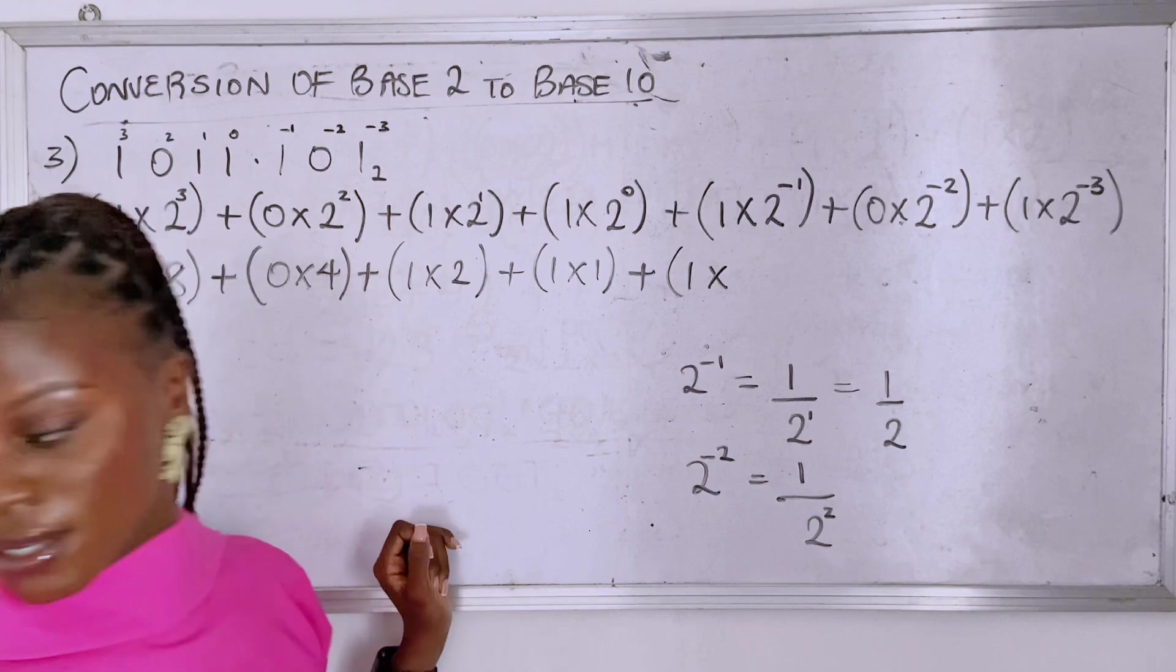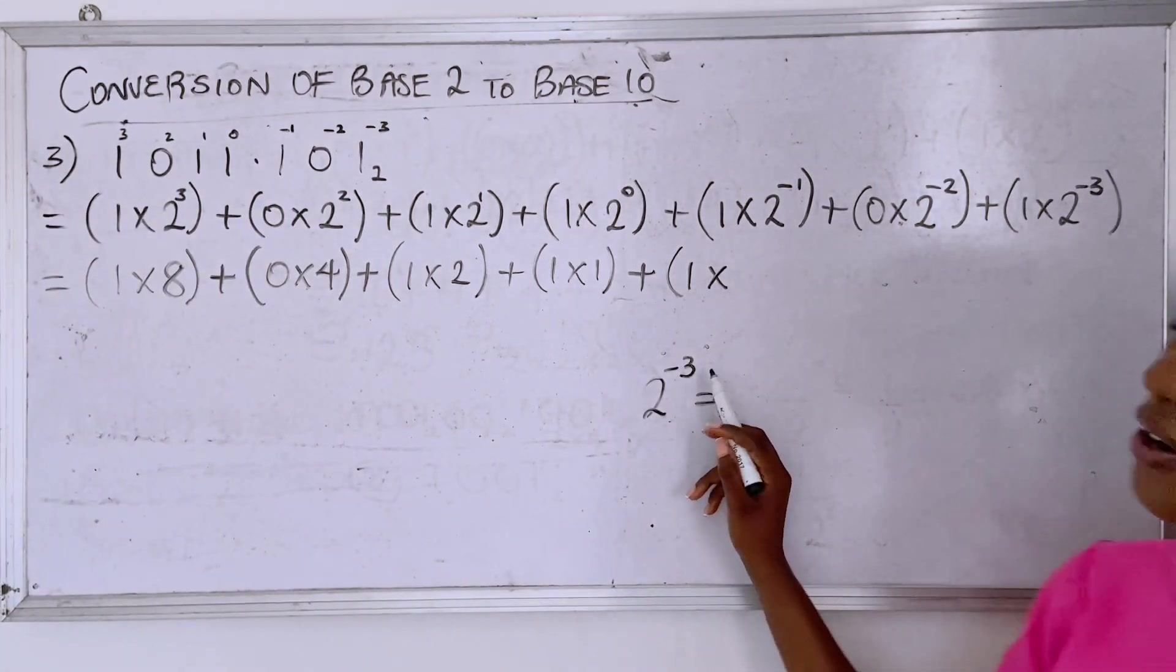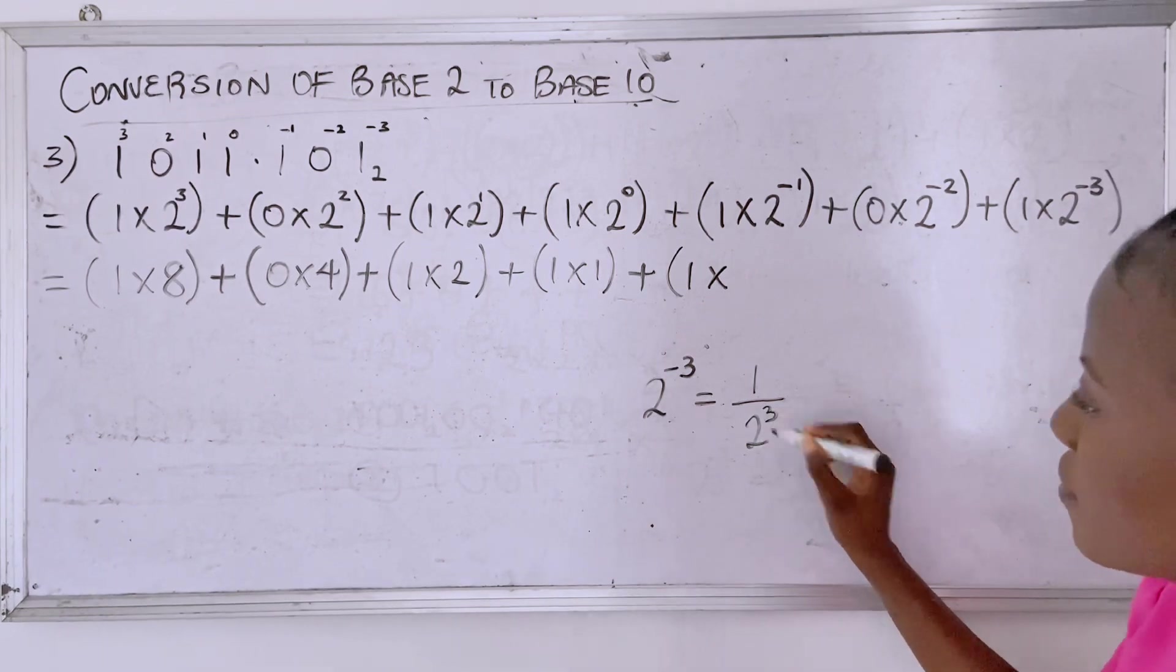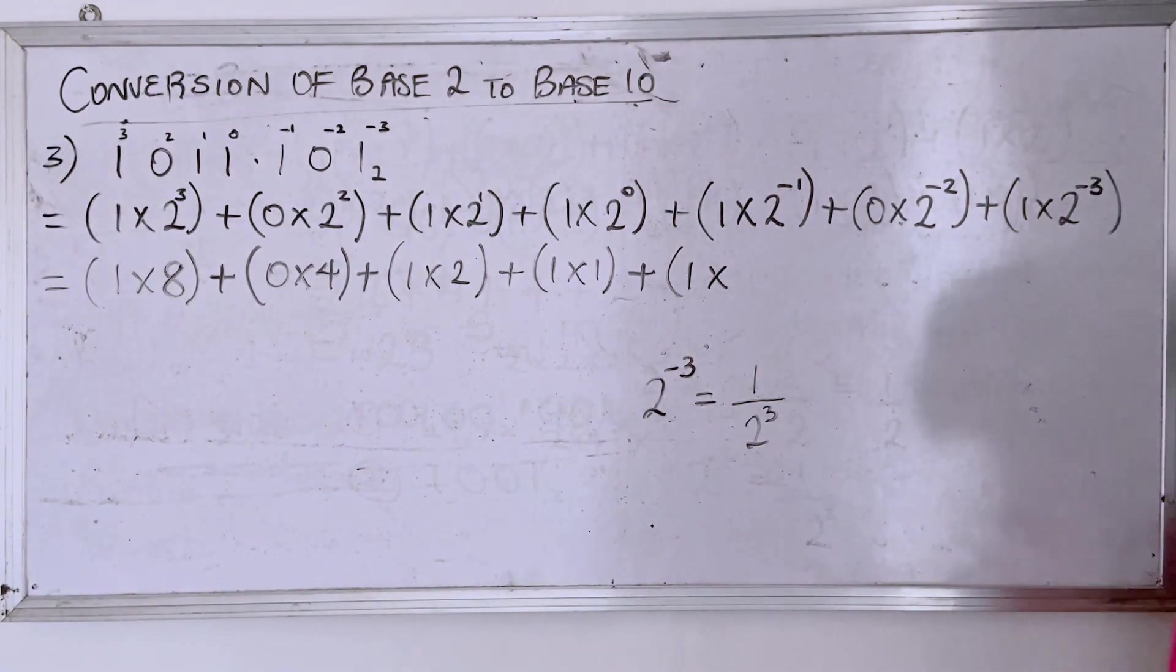If you have two raised to the power of minus three, this becomes one over two raised to the power three. Let's move on.